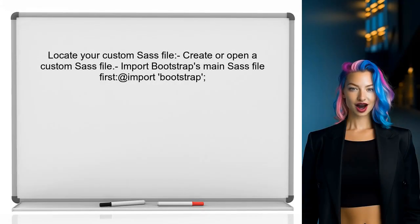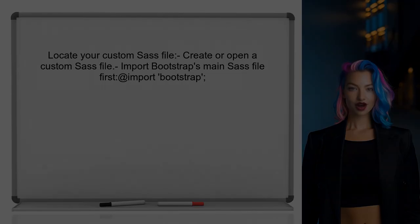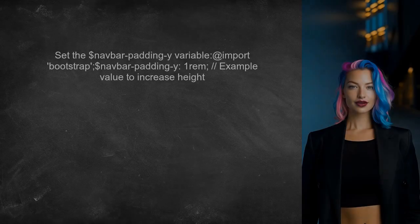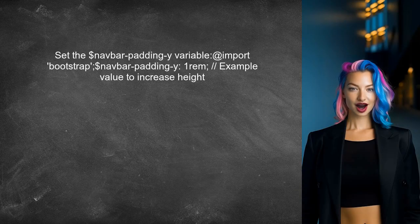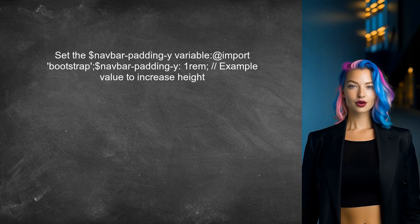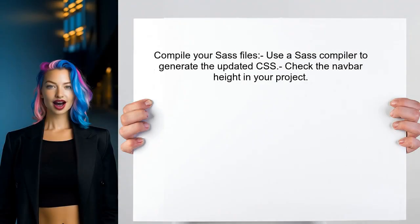Locate your custom SASS file where you can override Bootstrap variables. This file should be imported after Bootstrap's main SASS file. After importing, set the `$navbar-padding-y` variable to your desired value — this will ensure that the navbar height reflects the new padding settings. Finally, compile your SASS files to generate the updated CSS, which will apply the new navbar height to your project.